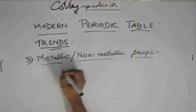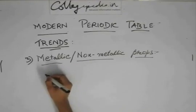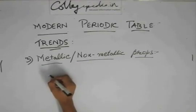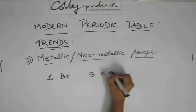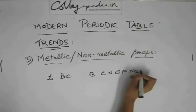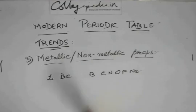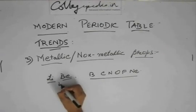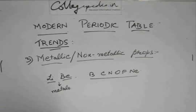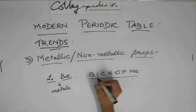Why is that? Consider period 2: it has lithium, beryllium, boron, carbon, nitrogen, oxygen, fluorine, neon. Lithium and beryllium are metals, and then all the others are non-metals.